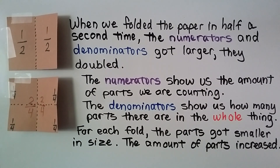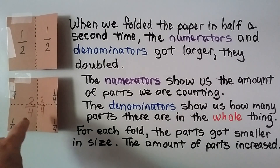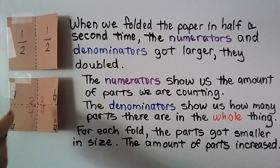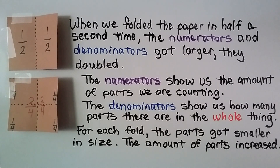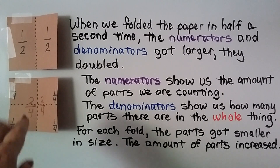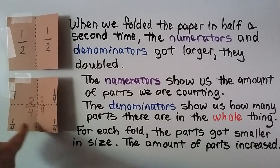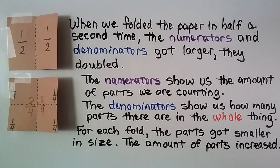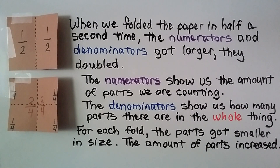For each fold, the parts got smaller in size. It was a half and now a fourth — it's this small corner here. The amount of parts increased, so the more parts we had from the same whole thing, the smaller each part got. If you have a candy bar and you want to share it with six different friends, you'll each get a tiny little piece compared to if you just shared it with one friend.